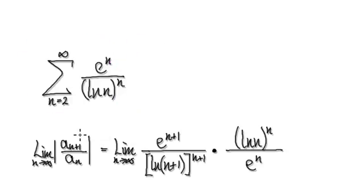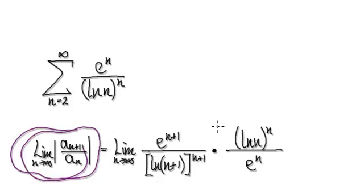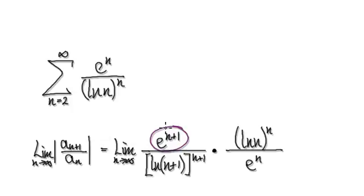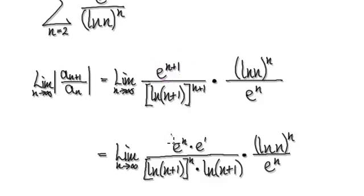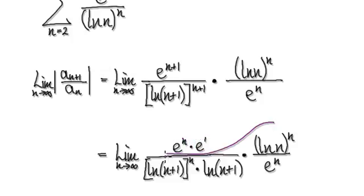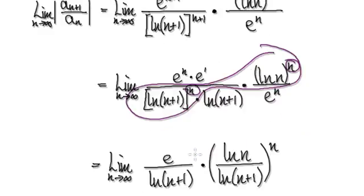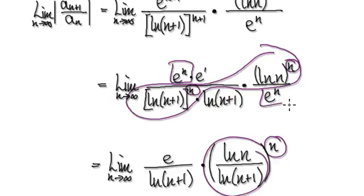So we're going to use the ratio test. When it comes to the ratio test, we always need to compute this value here. So that will then give us this. So now we write this as one block multiplying another block. And then now group these two together because it contains to the power of n, to the power of n. So you can write it neatly as the whole thing to the power of n. And then this e to the power of n will cancel out.